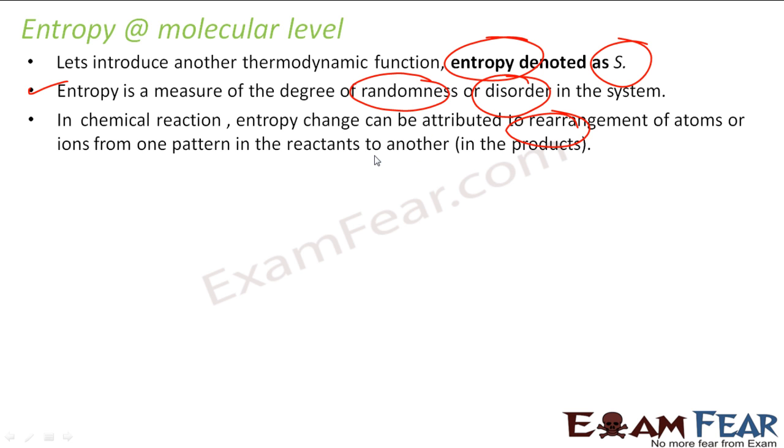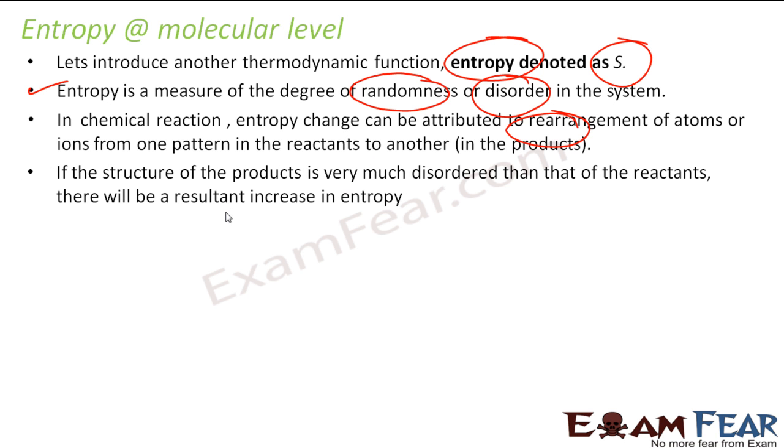In chemical reactions, entropy change can be a rearrangement of atoms or ions from one part to another, an example I showed in the last slide. Or in the structure, if the product is much more disordered than the reactant, we say that entropy has increased. If the product is not that much disordered or is ordered, then we say the entropy has decreased. That rarely happens.